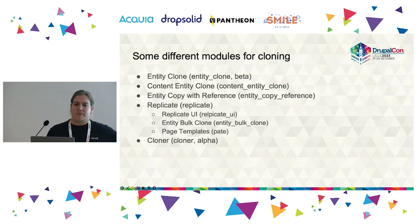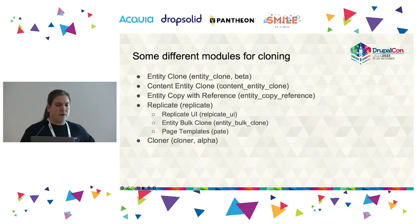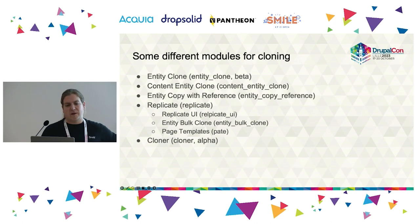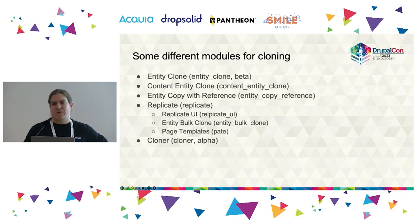Here are some of the modules that do cloning. There is Entity Clone in beta, Content Entity Clone, Entity Copy with Reference, and Replicate — which has at least three different user interfaces: Replicate UI, Entity Bulk Clone, and Page Templates, all using Replicate. Then there is Cloner in alpha stage. Both Replicate and Cloner don't have a user interface — they are tools developers can use to build their own cloning workflows.